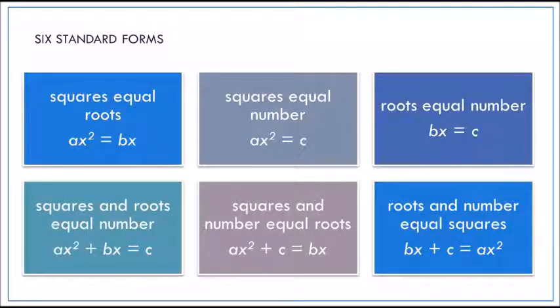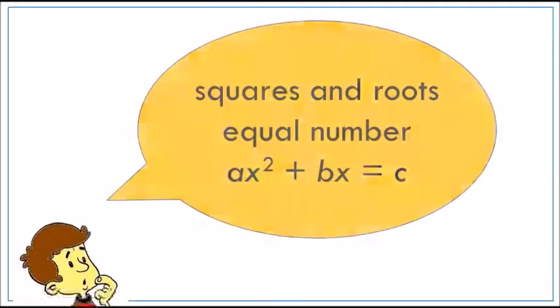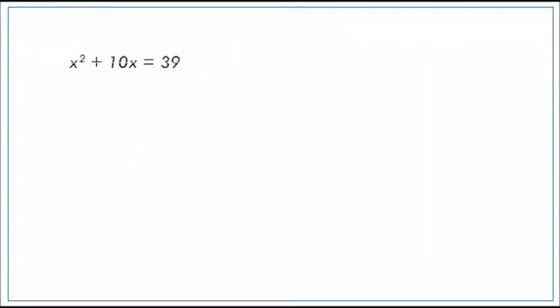In his book, he used this example: x squared plus 10x equal to 39.